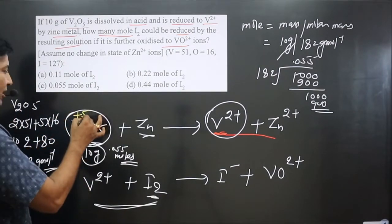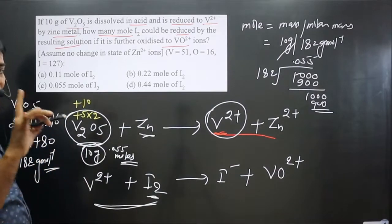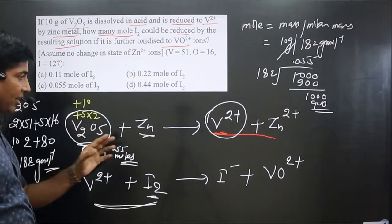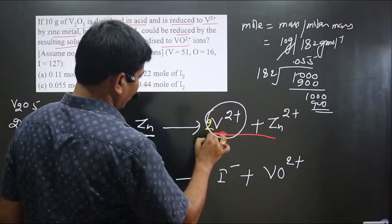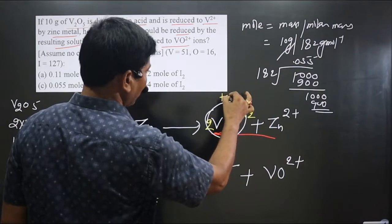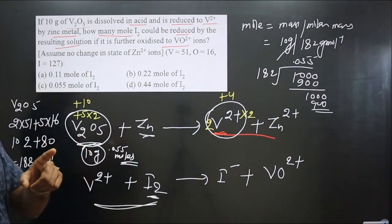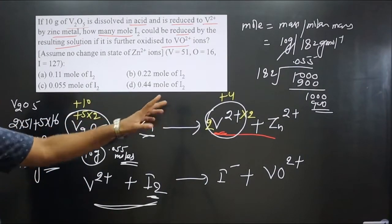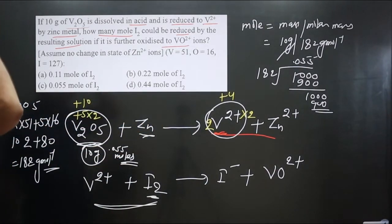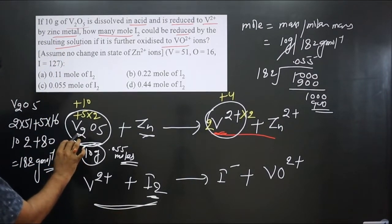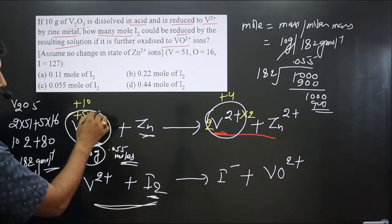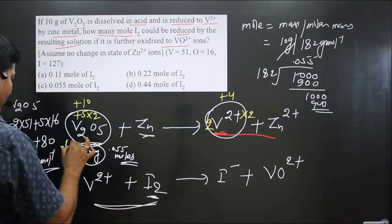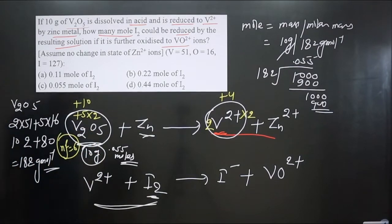We must balance the number of elements before balancing charge. For 2 vanadium at +5 each, total is +10. For 2 vanadium at +2 each, total is +4. The difference in oxidation number gives the N-factor: 10 minus 4 equals 6. So the N-factor for V2O5 is 6.